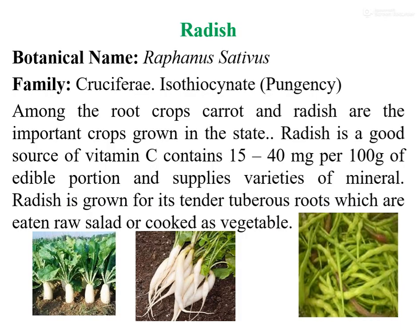The botanical name of radish is Raphanus sativus, belonging to the family Cruciferae or Brassicaceae. Isothiocyanate is a chemical compound present in radish, which gives the pungent taste in the radish root crop.